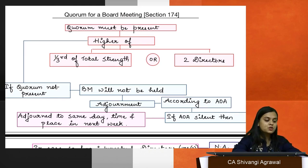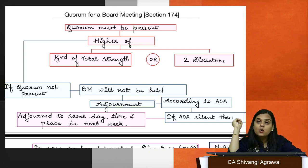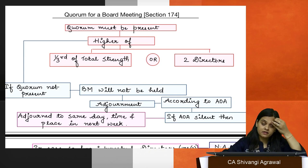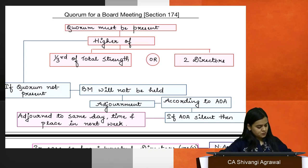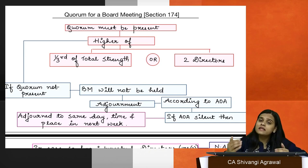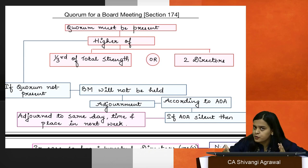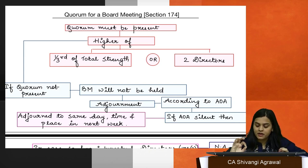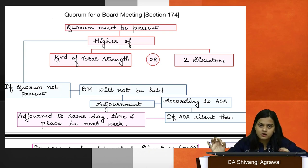Section 174 covers quorum of a board meeting. Quorum is the minimum number of members required to validly constitute and conduct a board meeting. The requirement is one-third of total strength or two, whichever is higher. Although articles may specify a higher quorum, they cannot specify a lower quorum as that would be non-compliance with the law.